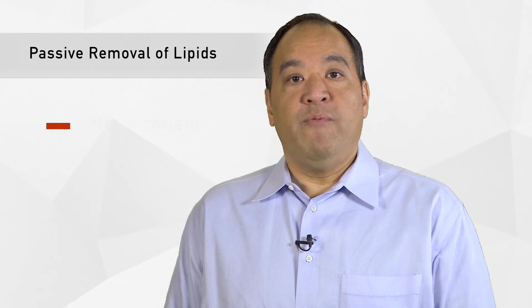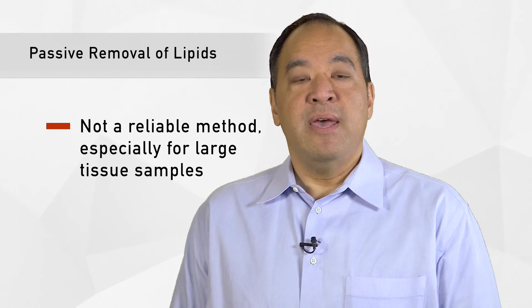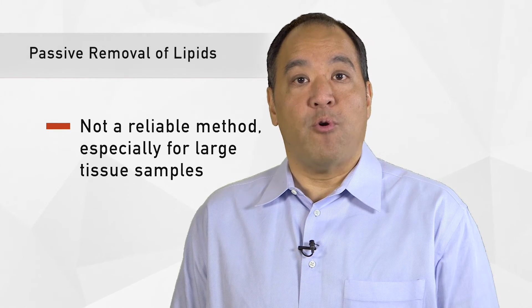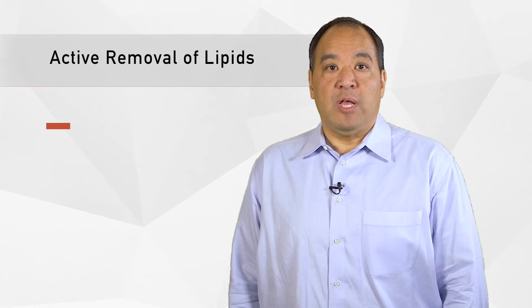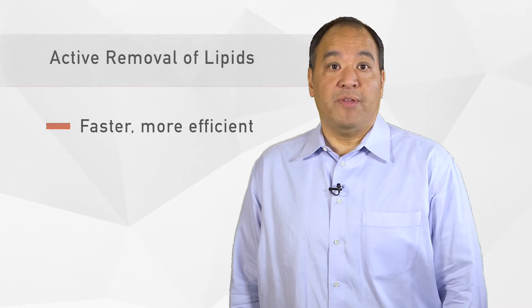After polymerization is complete, lipids are removed from the tissue to clarify it. This is performed either passively or actively by placing samples in a detergent solution. Passive removal of lipids is less costly, but it's not a reliable method, especially for large tissue samples such as entire organs. Active removal of lipids from tissue samples is faster and more efficient.